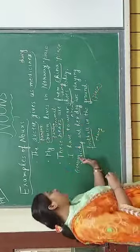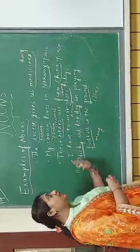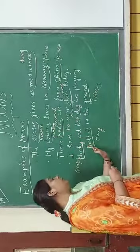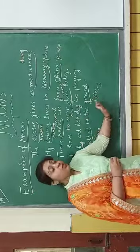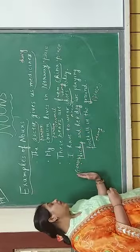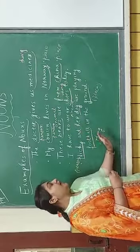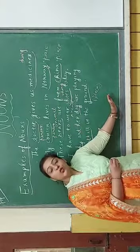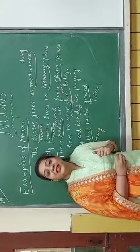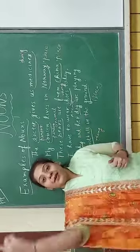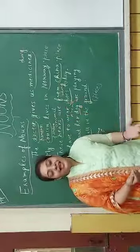So in this sentence, Nikki is the name of a person, dog is an animal, football is a thing, and ground is a place. We have covered person, animal, thing, and place. So dear students, what is a noun? A noun refers to the name of any person, place, animal, or thing.